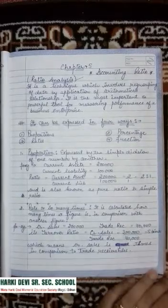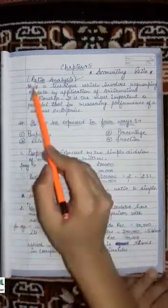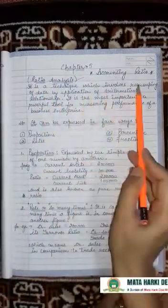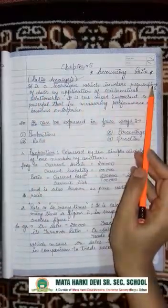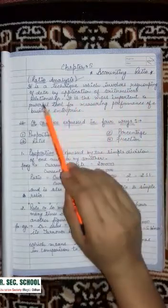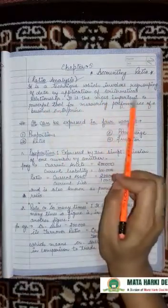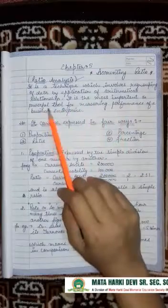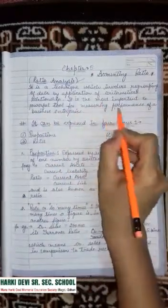So let's start with the meaning of ratio analysis. Ratio analysis is the technique which involves the regrouping of data by application of mathematical relationships, and it is the most important and powerful tool for measuring the performance of a business enterprise.